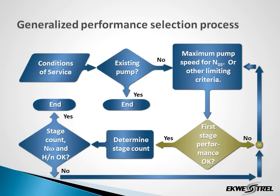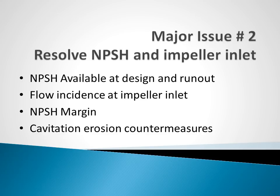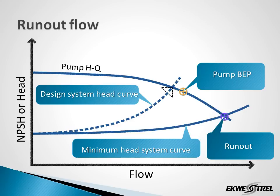We've talked about how the system curve affects the sizing of the pump, but suction performance of the first stage is a very important issue. Major issue number two: resolution of NPSH and the impeller inlet. This is actually a package of related issues including NPSH available, flow incidence, NPSH margin, and cavitation. Taking a look at the pump and system curves, there's usually a so-called run-out condition based on variations in the system characteristic. We have the design head curve here and a minimum head system curve, and the intersection of that with the pump curve is the run-out condition.